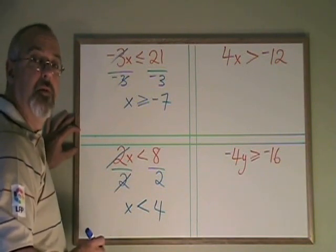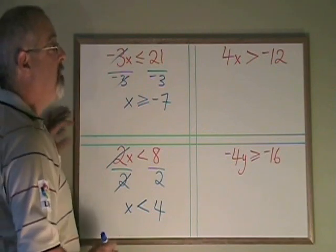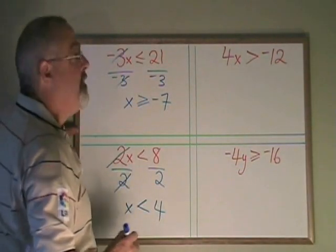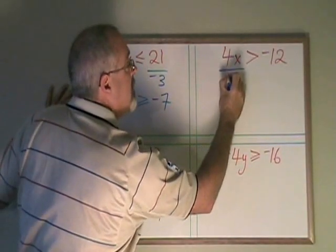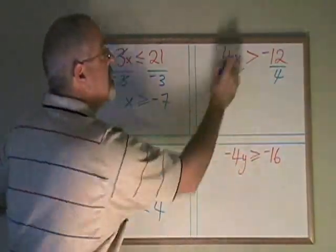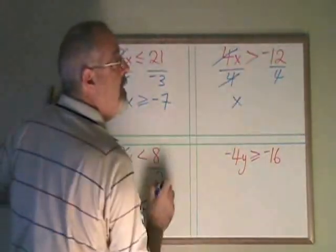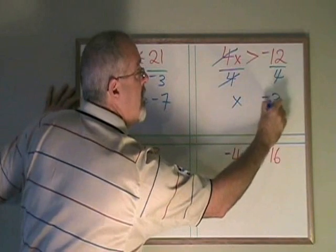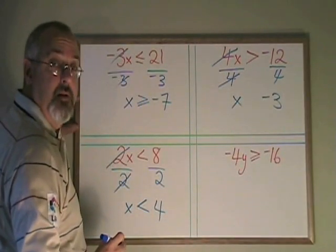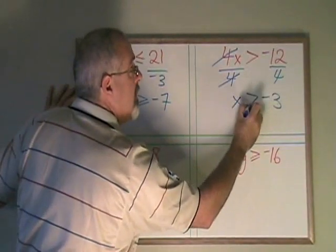It's only if I'm dividing both sides by a negative number that I would turn it backwards. Here we have 4x greater than negative 12. I have to divide both sides by 4 in order to cancel and isolate my x. Negative 12 divided by 4 is negative 3. And in this case, I'm dividing both sides by a positive number, so I keep my symbol the way it is.